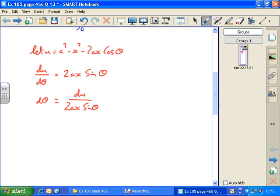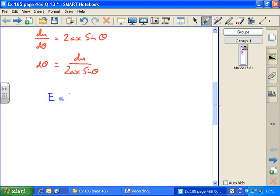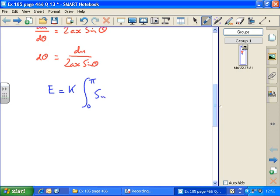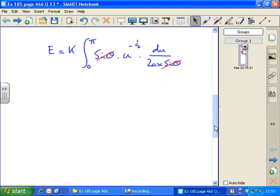So now putting this information into the integral, we have e equals k integral between 0 and pi sin theta times u to the minus a half times du over 2ax sin theta. The sin thetas cancel, which is what we want. The 2ax can come outside the integral. So e equals k over 2ax, integral between 0 and pi, u to the minus a half du.